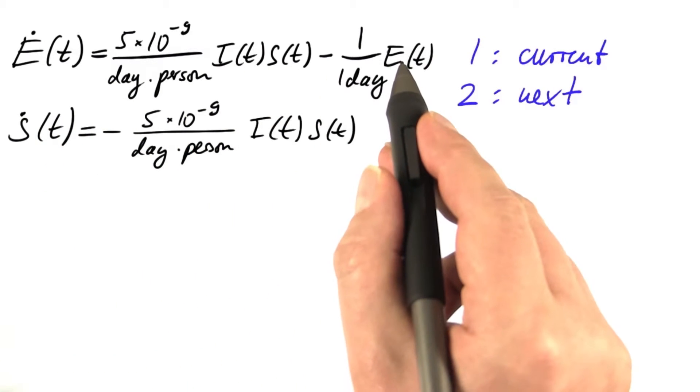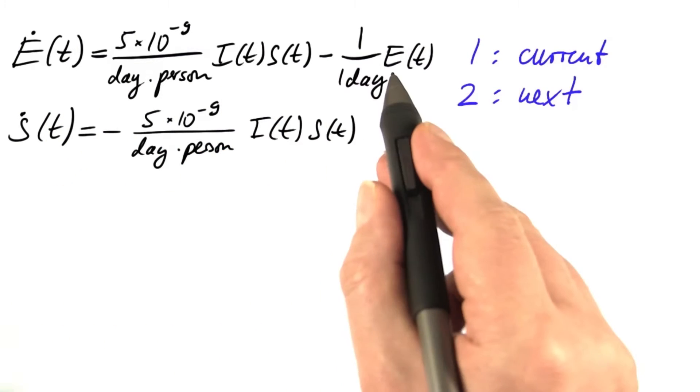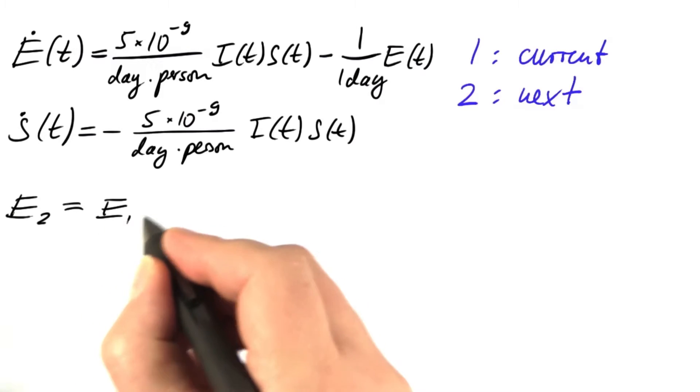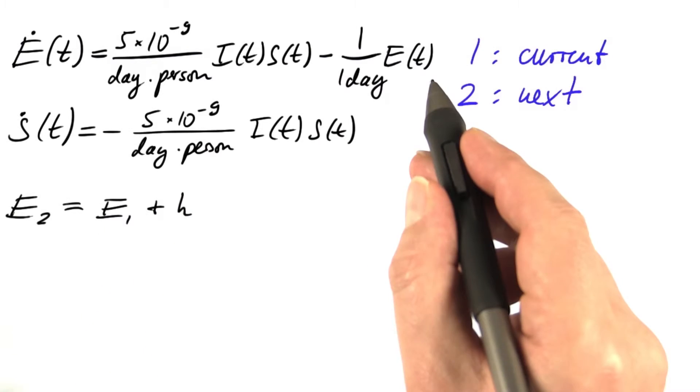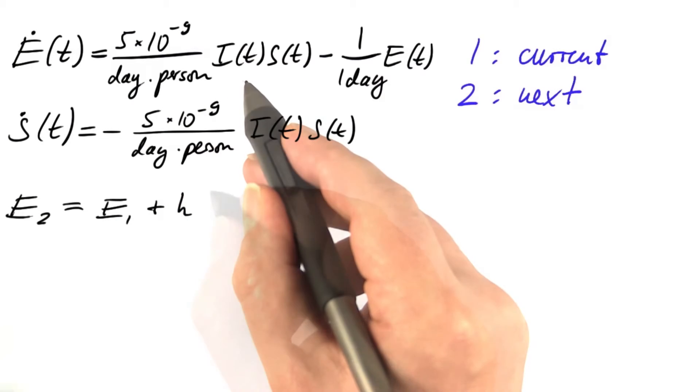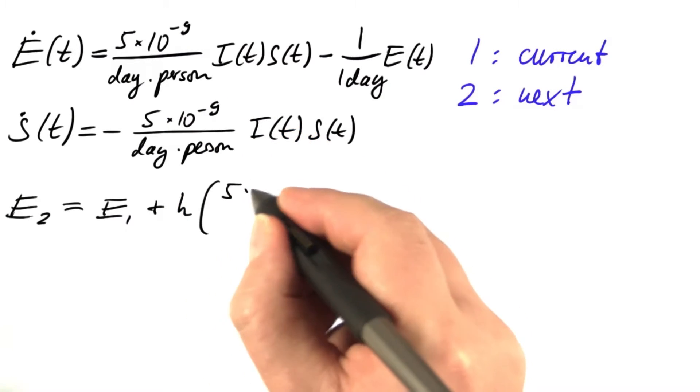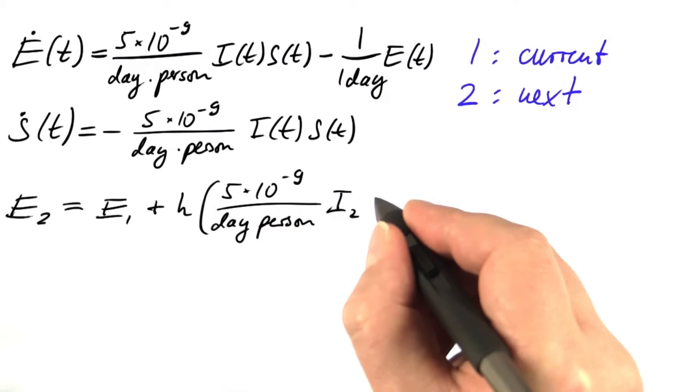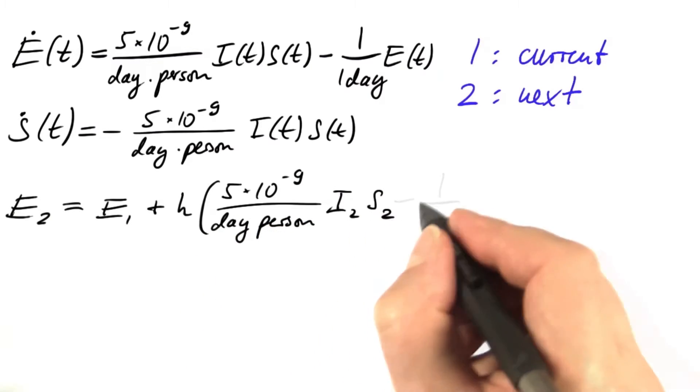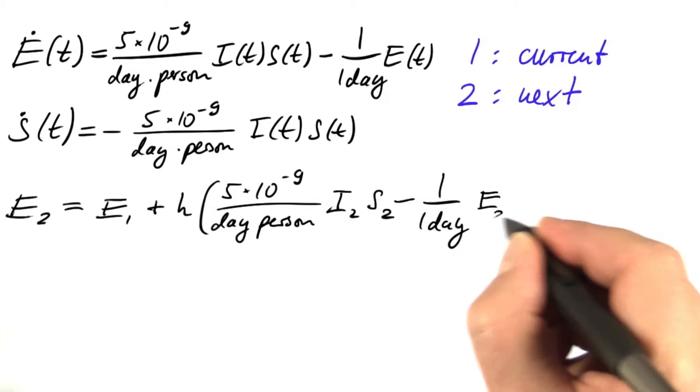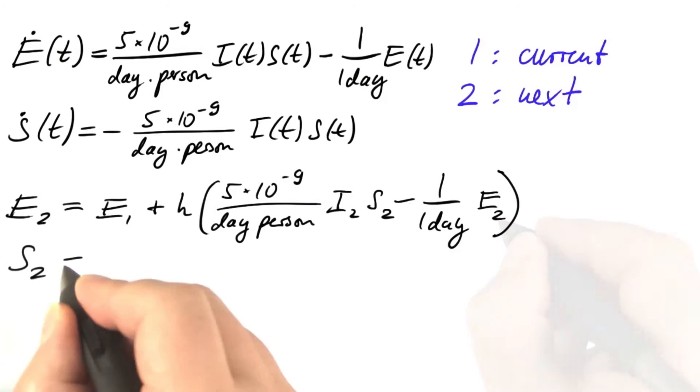A trick to find the value of e for the next time step is to look at these two differential equations in parallel. For the first one, the backward Euler method says the value for the next time step is the value for the current time step plus the time step times our estimate of the rate of change for the next time step, which is 5 times 10 to the minus 9 per day and person times i2, s2, backward Euler, minus 1 over 1 day, e2, backward Euler again, not e1.